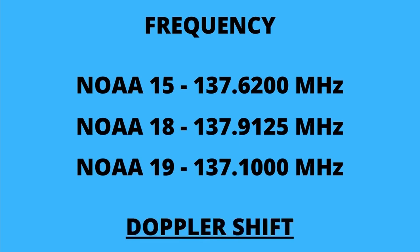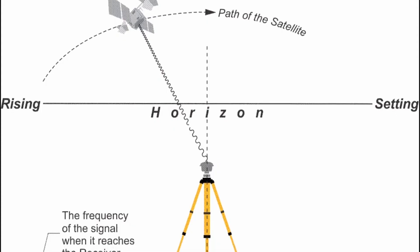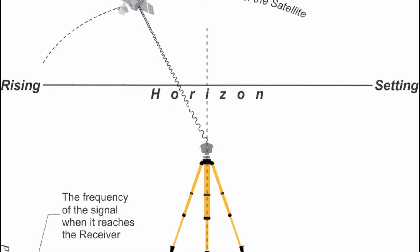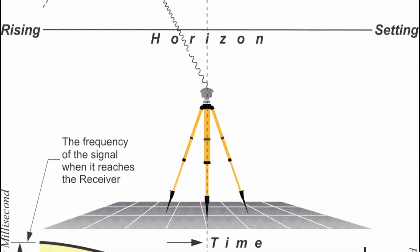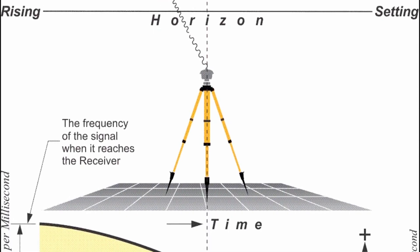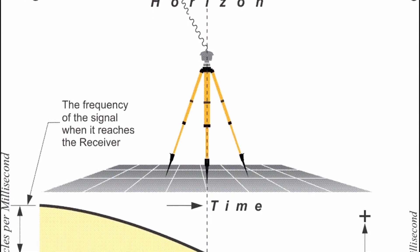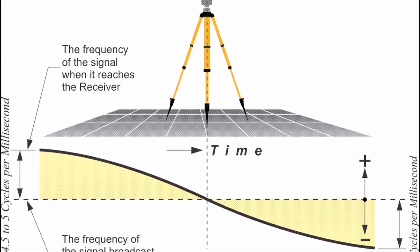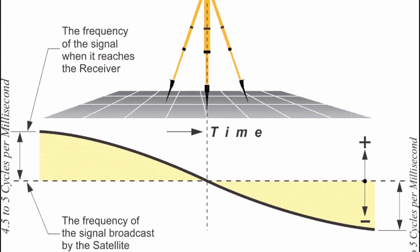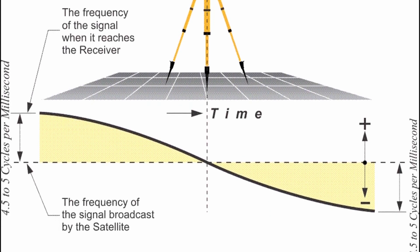The changes in the frequency are observed due to a phenomenon called the Doppler effect, in which when a radio frequency emitting device travels at a very high speed, the ground station experiences a shift of frequency of dozens of kilohertz due to the curvature of the earth.